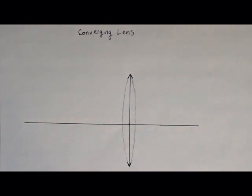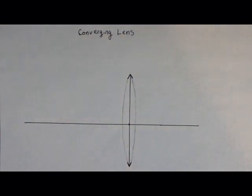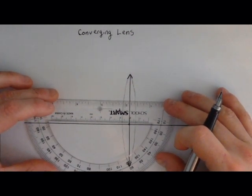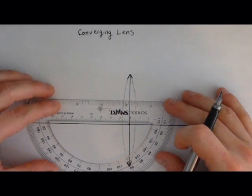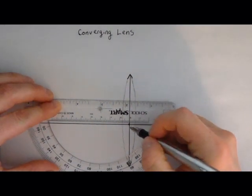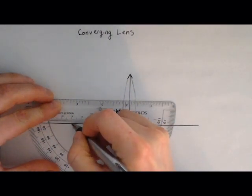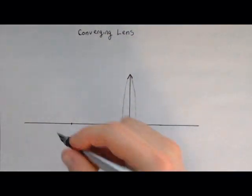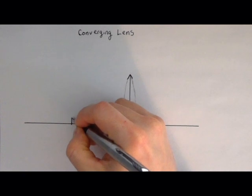Now we need an object. So let's put an object. I'm going to put an object about six centimeters away from my lens. So there's the two centimeter mark, there's the eight centimeter mark. And so that's going to be where I place my object.